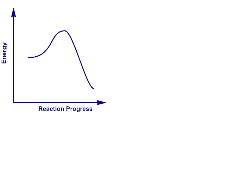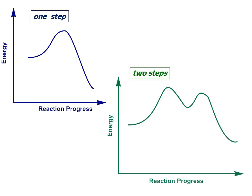From the shape of the curve and the number of humps, i.e. the number of transition states, we can tell whether our reaction has one step, two steps, or more steps.